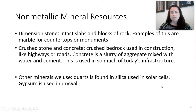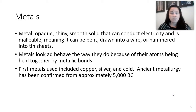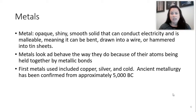We talked a little bit about this when we went over minerals earlier in class, but we have to think about where we get them and how we find them. The other source is metals — these are shiny, smooth solids that conduct electricity and can be malleable. We use them in wiring and they can be made into sheets. Metals look and behave the way they do because their atoms are held together by metallic bonds. Some of the first metals used included copper, silver, and gold. Ancient metallurgy has been confirmed from 5,000 BC — the practice of melting and smelting is quite ancient.